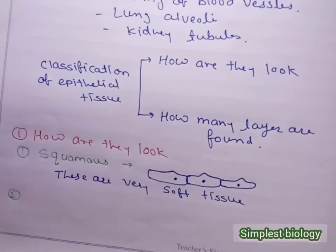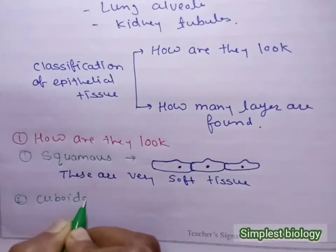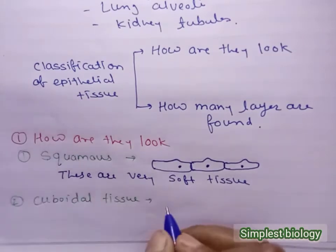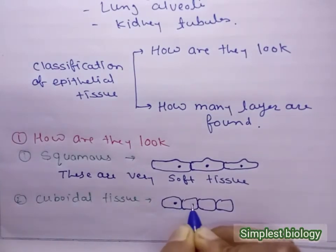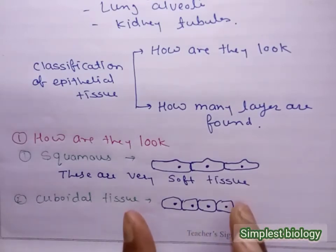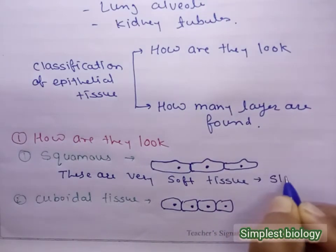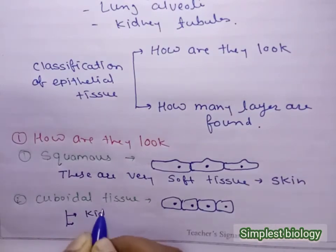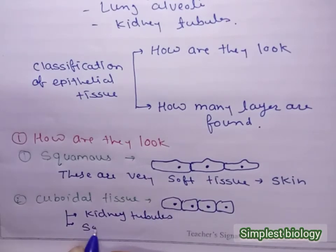The second type is cuboidal epithelial tissue. This is a cube-like structure. These cubes are attached to each other and form a long chain-like structure — we call this cuboidal epithelium. Squamous epithelial tissue is found on skin surfaces, while cuboidal epithelial tissue is found in kidney tubules and the salivary glands present in the mouth region.